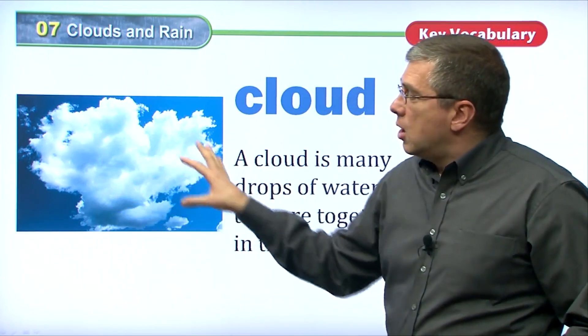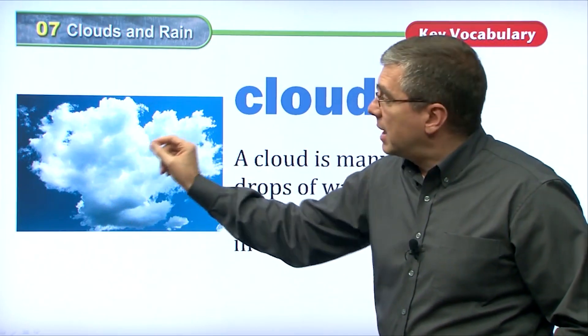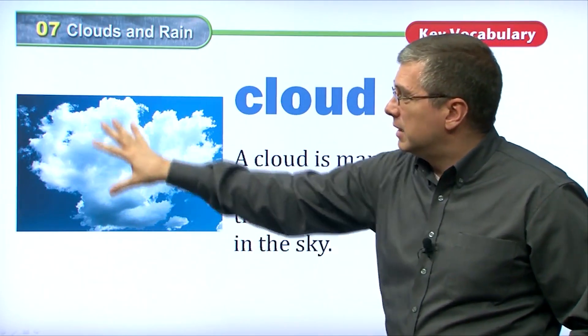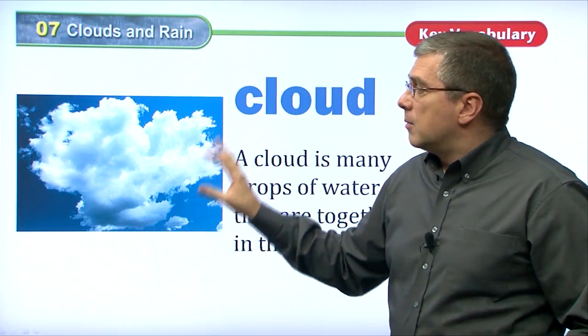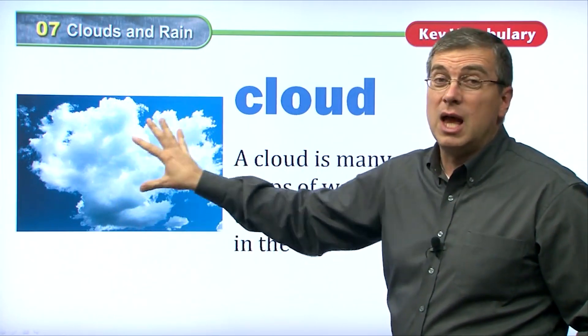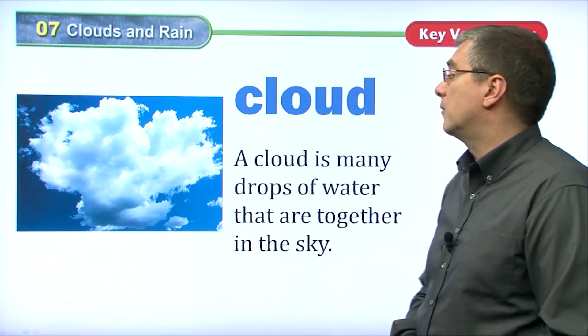When we look at a cloud, we're not looking at air, this is actually water. There's many little drops of water, but they're very light, and there's not so many of them. There's enough of them to make it look different. But in this cloud, there is water. If the cloud gets heavy, a lot of water gets together, that rain will fall from a cloud.